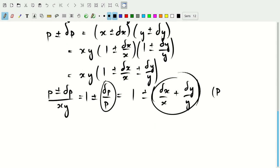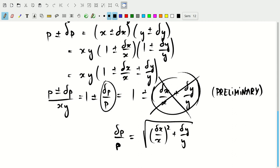Of course, this is preliminary and we'll come back to that. We'll find out that this is wrong, and that dp over p is really the square root of dx over x squared plus dy over y squared.